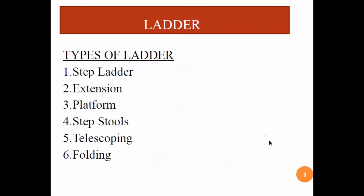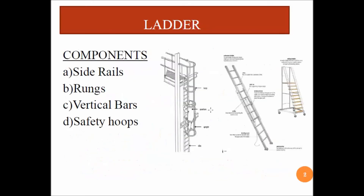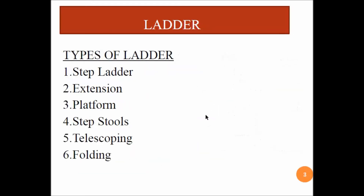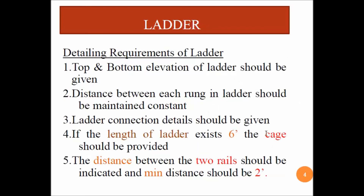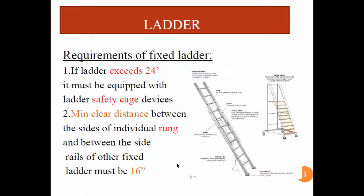If the length of the ladder is more than six feet, a cage must be provided. I will show in the coming slides what the cage is. The distance between the two rails should be indicated, and the minimum should be two feet.